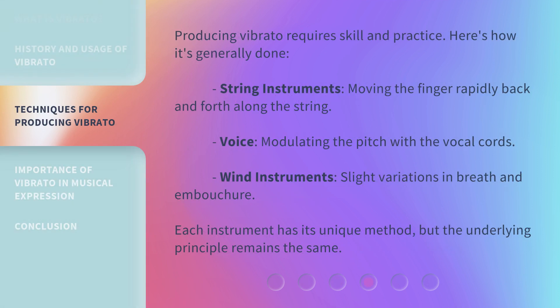Producing vibrato requires skill and practice. Here's how it's generally done: on string instruments, by moving the finger rapidly back and forth along the string; with the voice, by modulating the pitch with the vocal cords; and on wind instruments, through slight variations in breath and embouchure. Each instrument has its unique method, but the underlying principle remains the same.